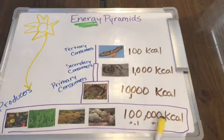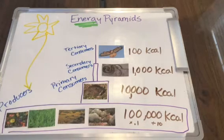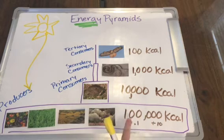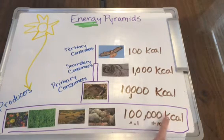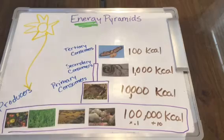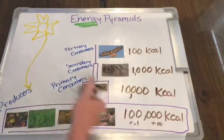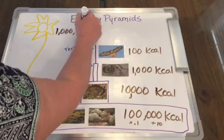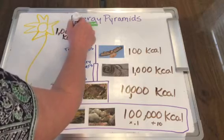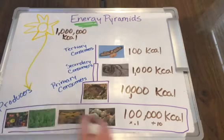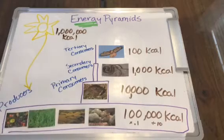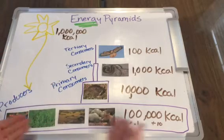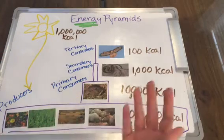If the producer level has 100,000 kilocalories, then the energy from the sun above it is 10 times bigger. So what's 10 times bigger than 100,000? You would add one more zero — instead of five zeros you'd have six zeros — giving you 1,000,000 kilocalories of energy that at a minimum came down from the sun to this little ecosystem. The sun probably gave this area a lot more than that, and just a lot of it gets lost.